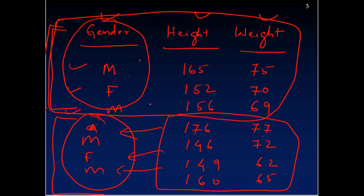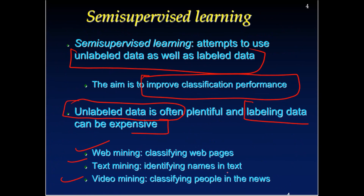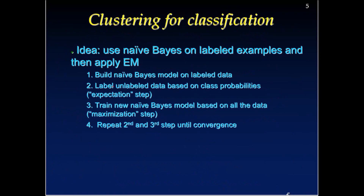You will see the accuracy or prediction power of this model is better than the first model trained using only the labeled data. The idea is to outperform the accuracy of the training algorithm used only for the labeled data. This approach is used quite heavily in classifying documents and web pages, since you often do not know the label of a web page for a large number of pages.